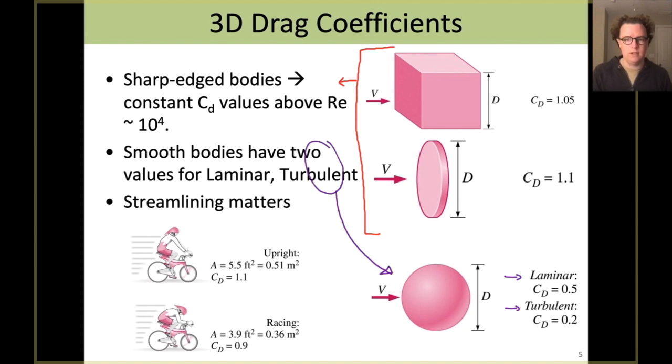Again, just like in 2D, if you've got a smooth body, you're going to have at least two drag coefficients, one for laminar and one for turbulent separation. And as shown by these bicyclists, your streamlining matters. So whether you are like the bicyclist on top, sitting straight up on your bike, or whether you are tucked down into a race position, notice that you're not changing the mass of that cyclist, but you are changing the frontal area that the fluid sees, and you're changing the drag coefficient. So it's both a change in area and a change in the effective drag coefficient. And that's why streamlining is so important.